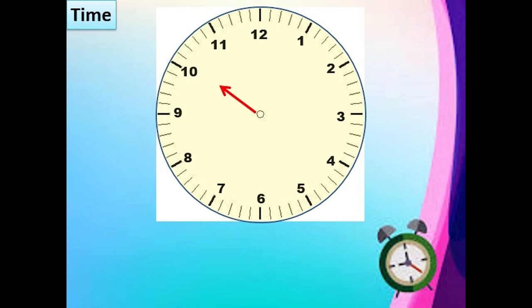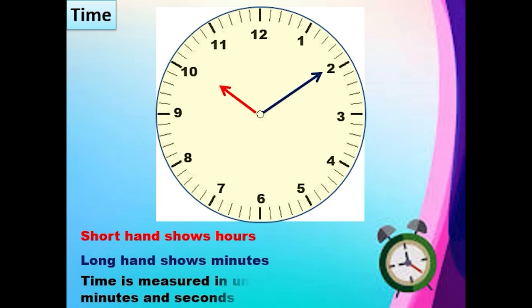There are two hands on a clock, a short hand and the long hand. A short hand shows hours and the long hand shows minutes. Time is measured in units of hours, minutes and seconds.